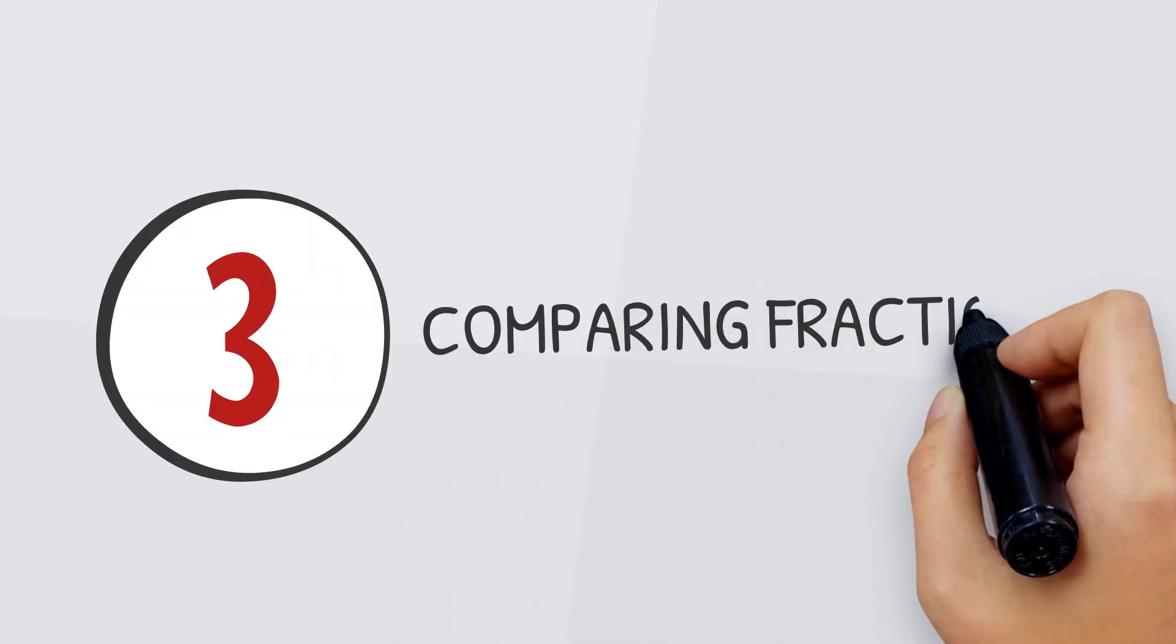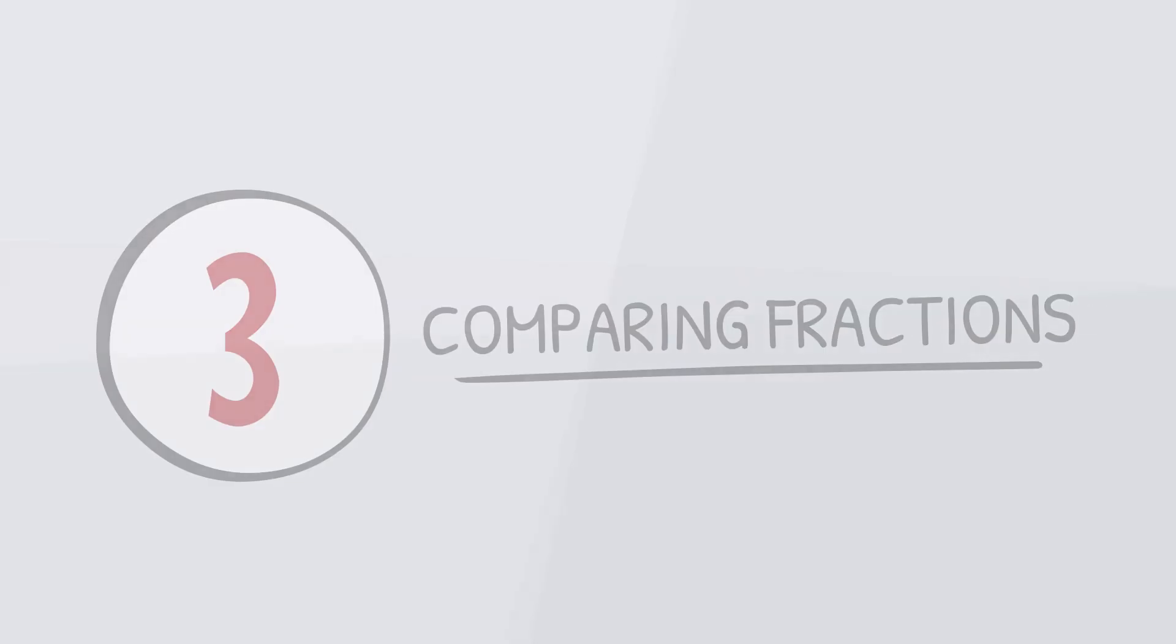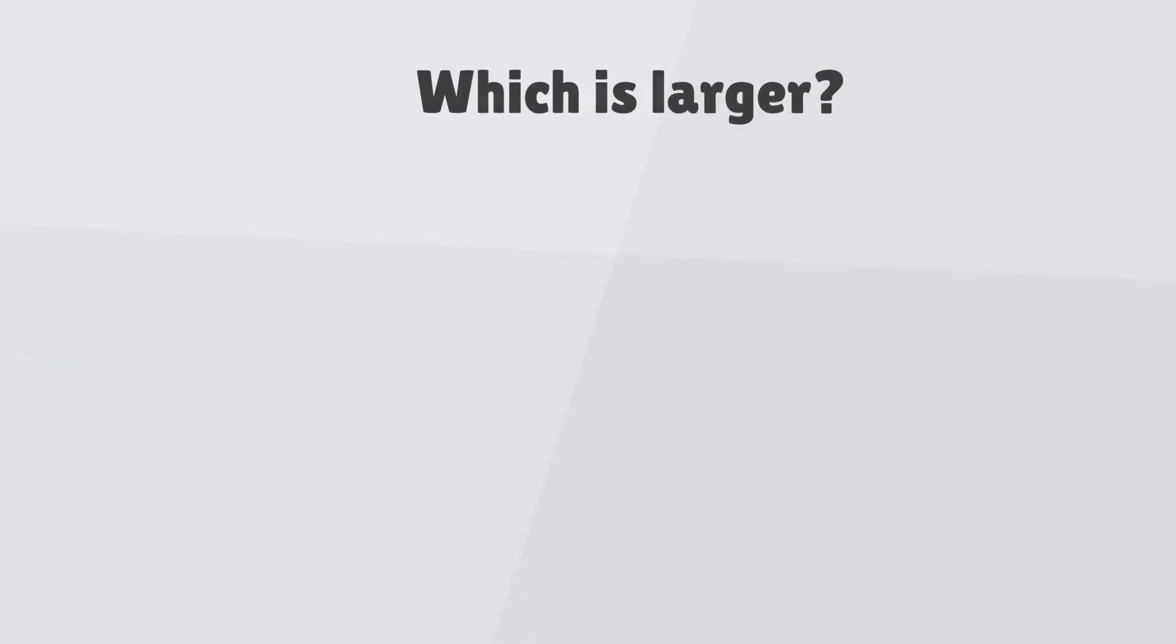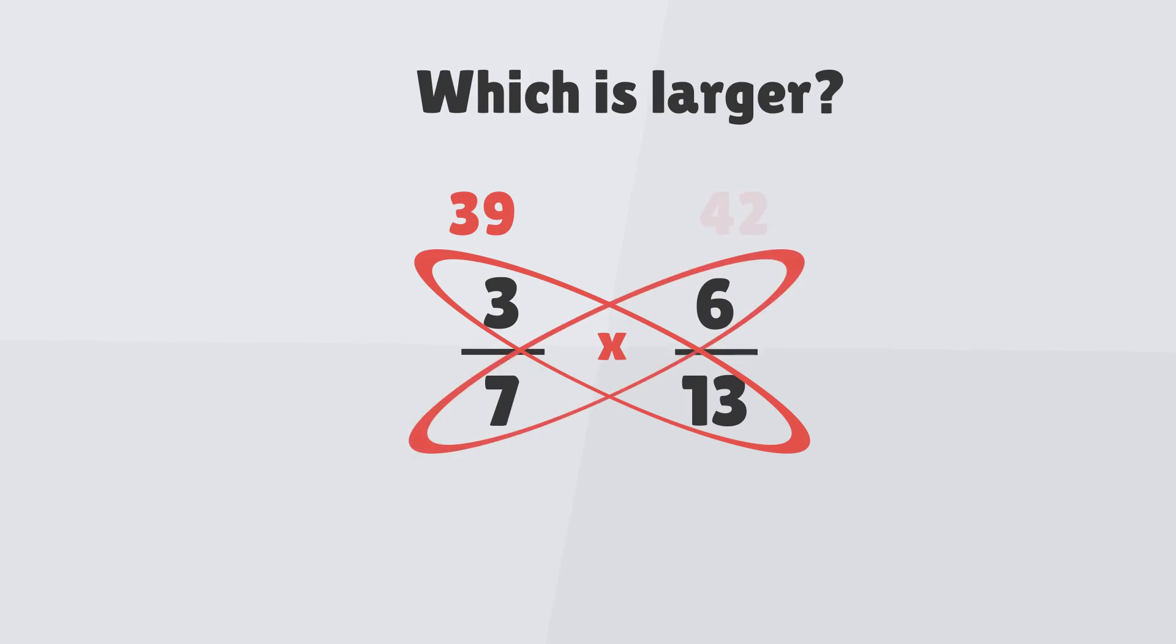Number three: comparing fractions. There is an extremely quick way to compare fractions. Have a look at the following problem: which is the larger of 3 over 7 or 6 over 13? Well, simply multiply opposing numerators and denominators and compare their values. And that's it.